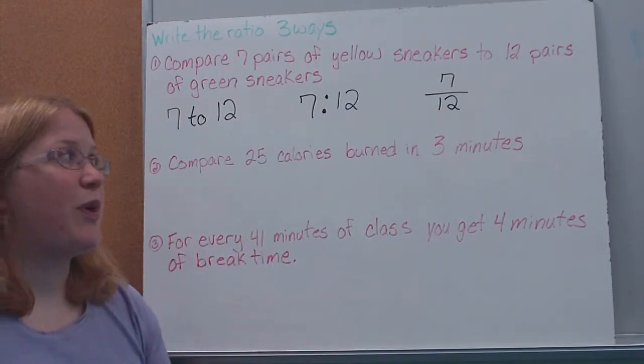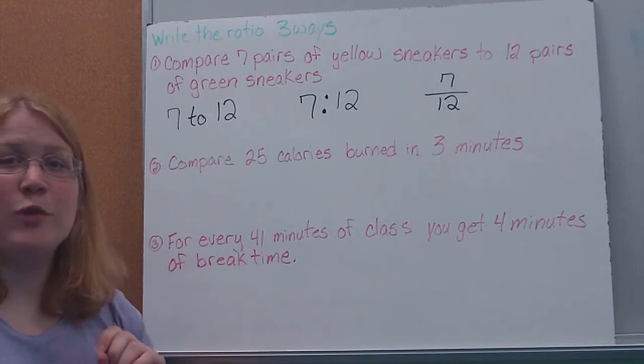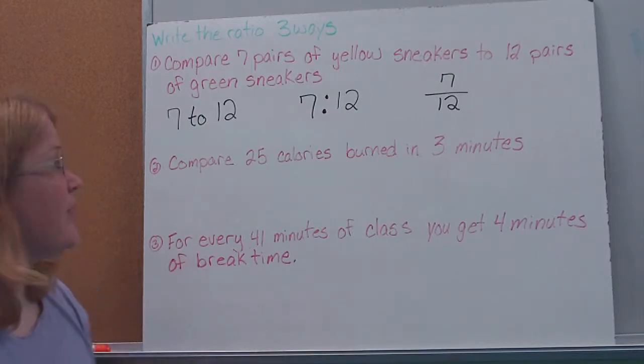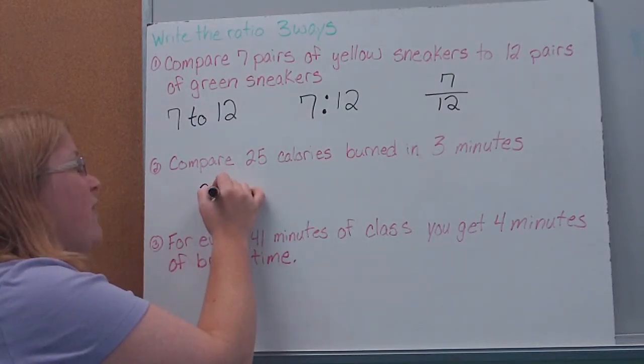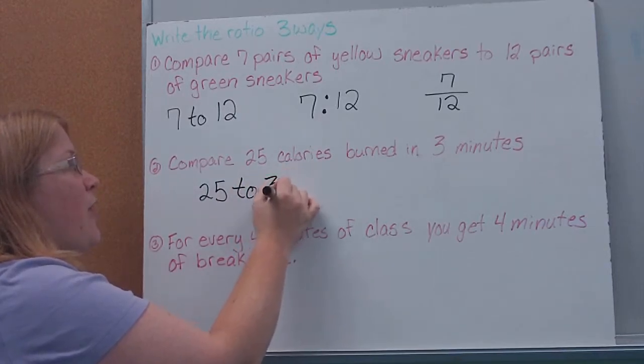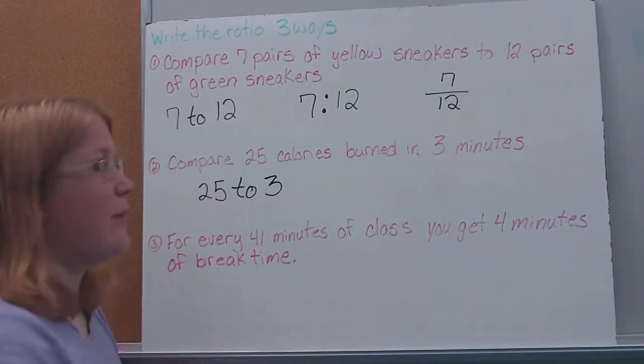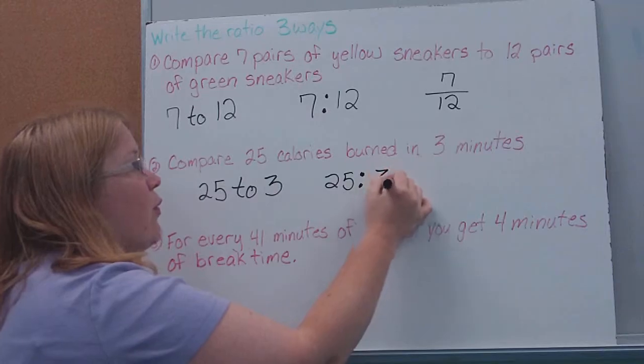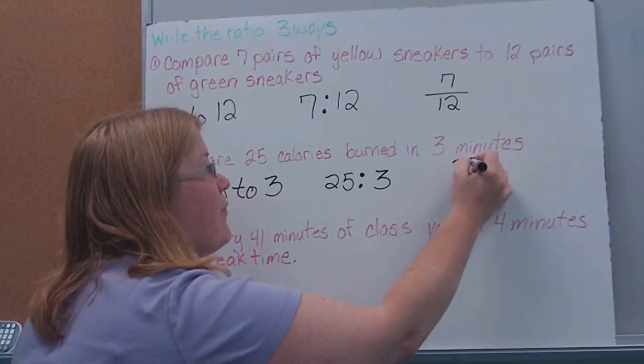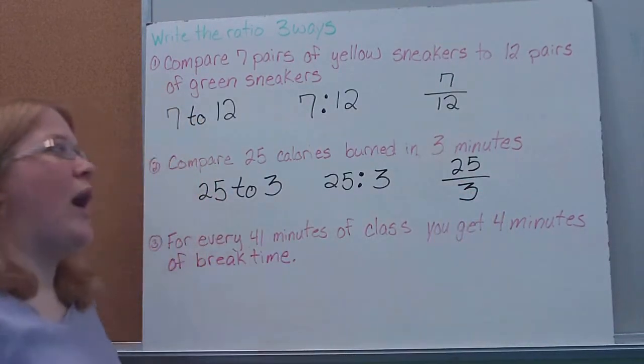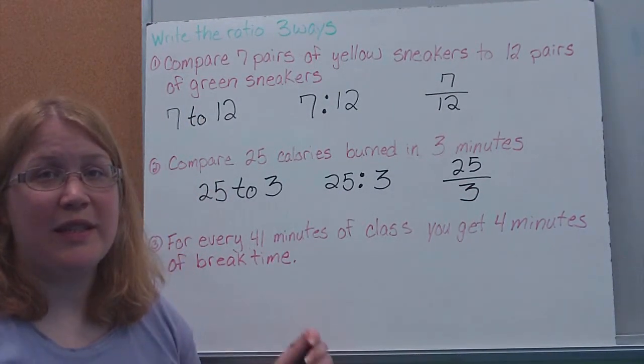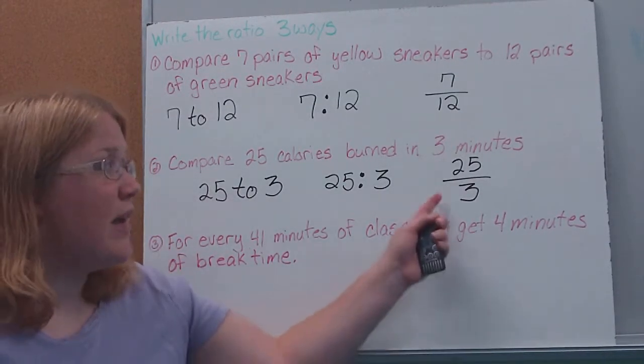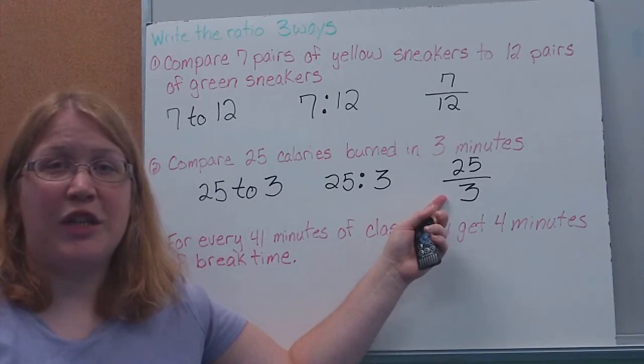Here I want to compare 25 calories burned in three minutes. This is a ratio, technically more specifically we could call it a rate, which I'll define for you tomorrow. We're just going to compare our two values. So I'm comparing 25 to 3, or in this case 25 calories to 3 minutes. Or I could write it using my ratio form with my colon. Or I could write it as a fraction, 25 to 3. Now what you'll notice is this is why in the end of the last few videos I was telling you to leave things as improper fractions.